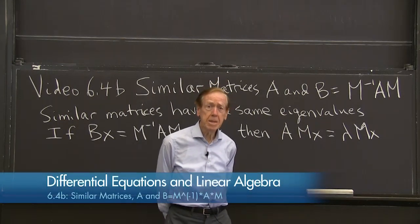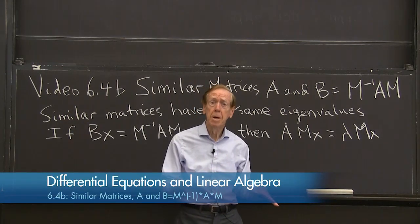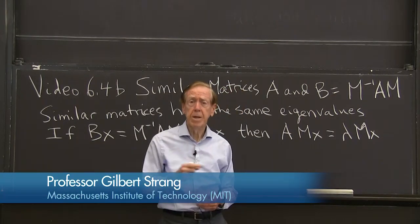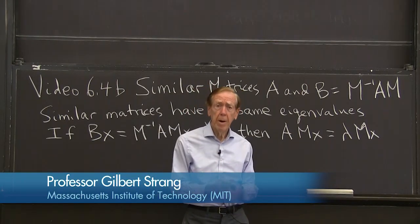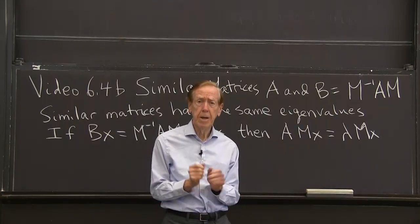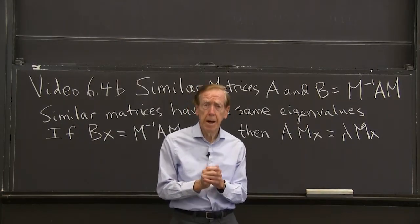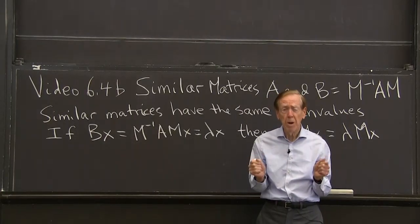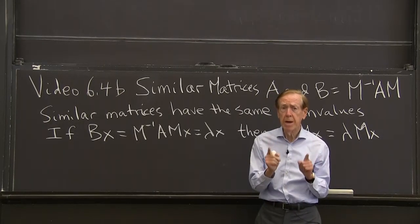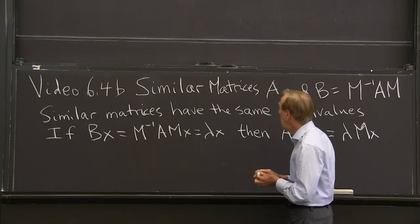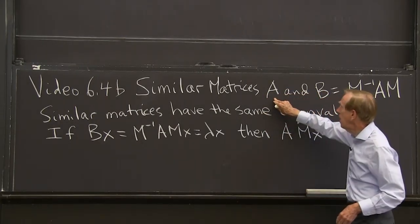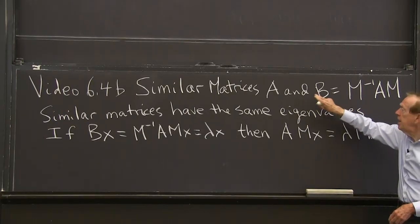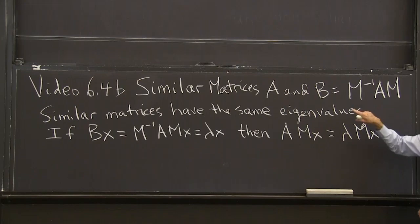OK, thanks. Here's a second video that involves the matrix exponential, but it has a new idea in it, a basic new idea. And that idea is two matrices being called similar. So that word similar has a specific meaning that a matrix A is similar to another matrix B if B comes from A this way.